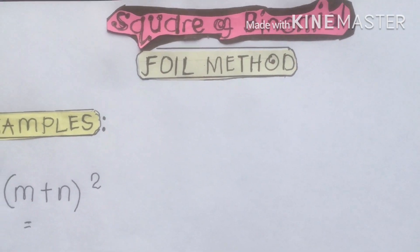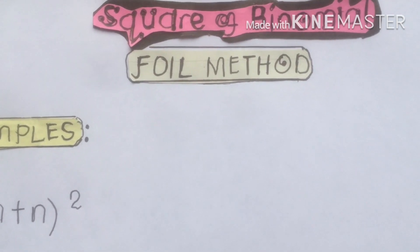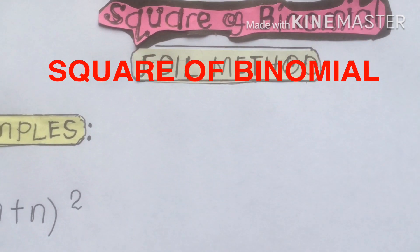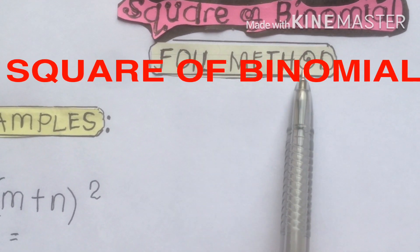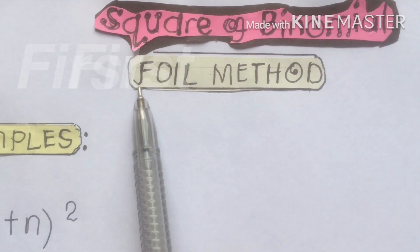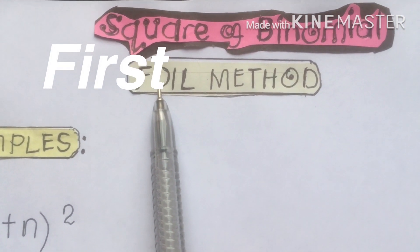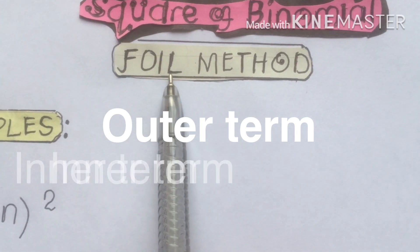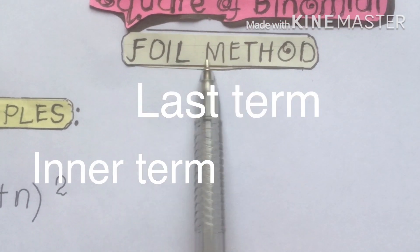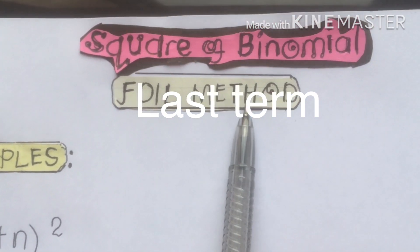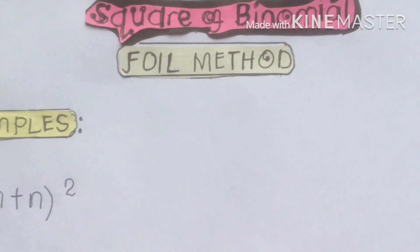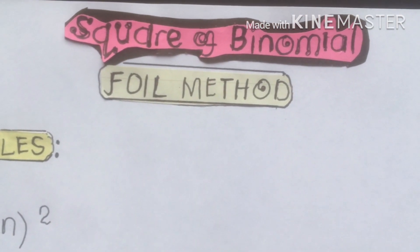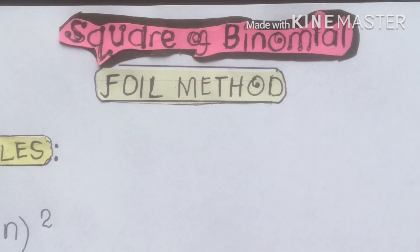Good morning class. We're going to discuss squaring a binomial using the FOIL method. FOIL means: F stands for First term, O stands for Outer term, I stands for Inner term, and L stands for Last term. This is the FOIL method that we're going to apply to answer the following equations using square of binomials.